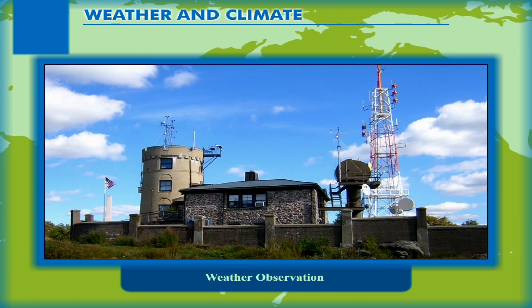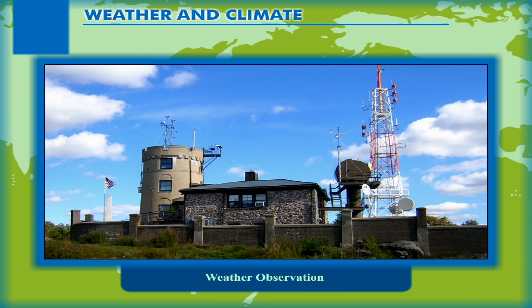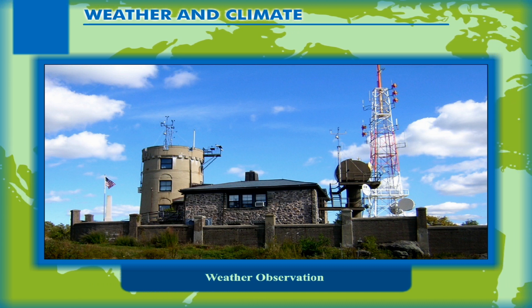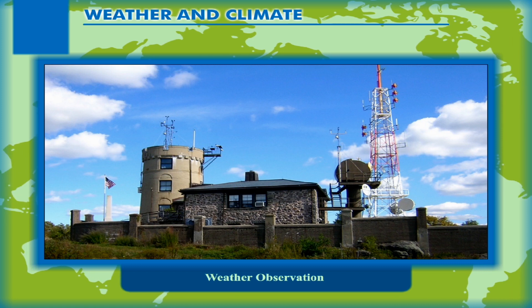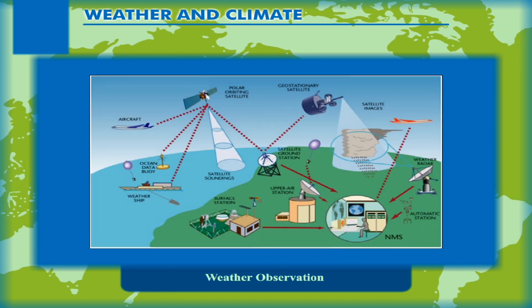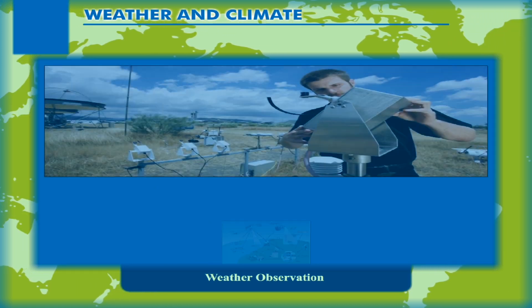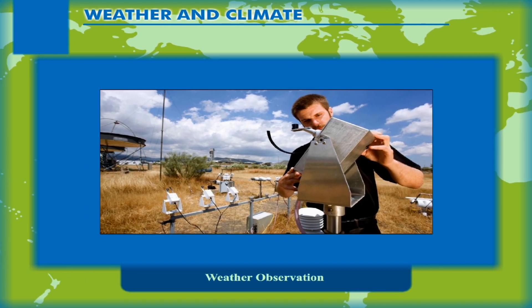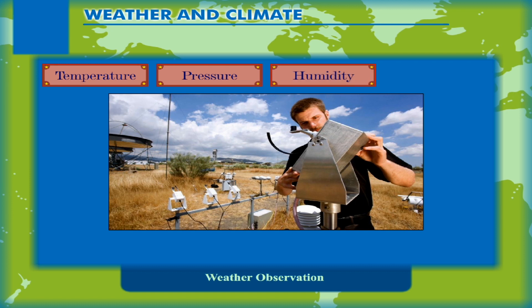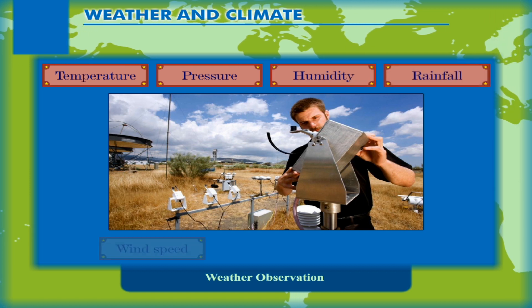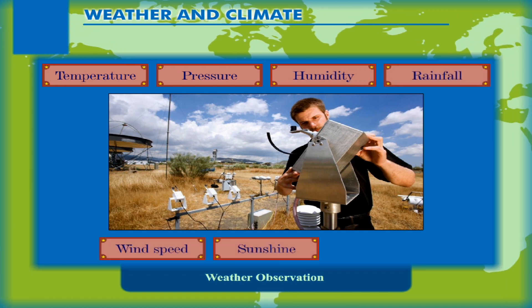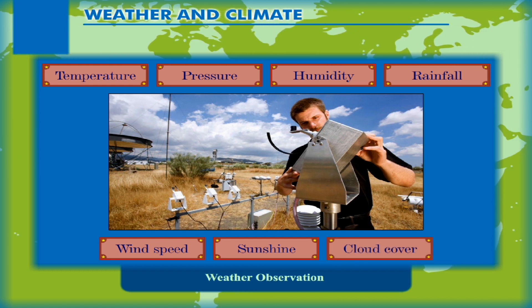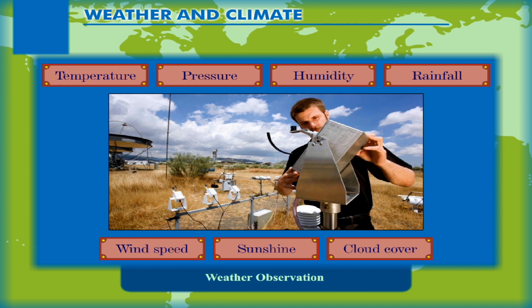Weather Observation. The weather conditions are analyzed and predicted on the basis of data recorded at the weather stations. Satellites are helpful in this work. The elements of weather that are studied include temperature, pressure, humidity, rainfall, wind speed, sunshine, and cloud cover. All these elements are measured by using several instruments.